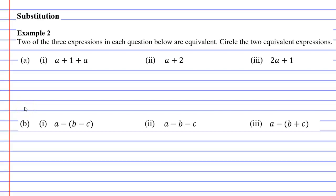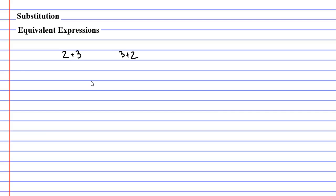In this video we're going to complete example 2, but before we do that we're going to have a little discussion about what an equivalent expression is all about. To help illustrate this I'm going to take two expressions: 2 plus 3, and 3 plus 2. These expressions are equivalent, and the reason they are equivalent is because they equal each other. The word equivalent basically means equal.